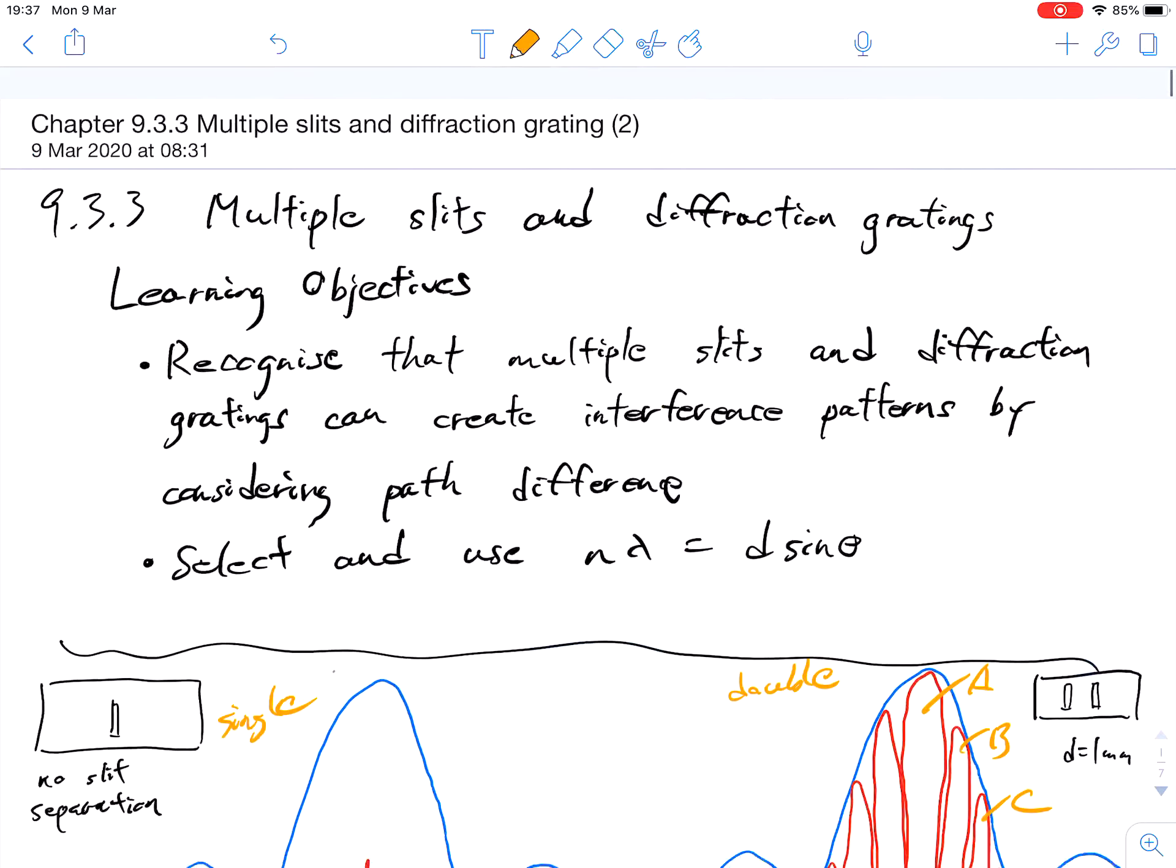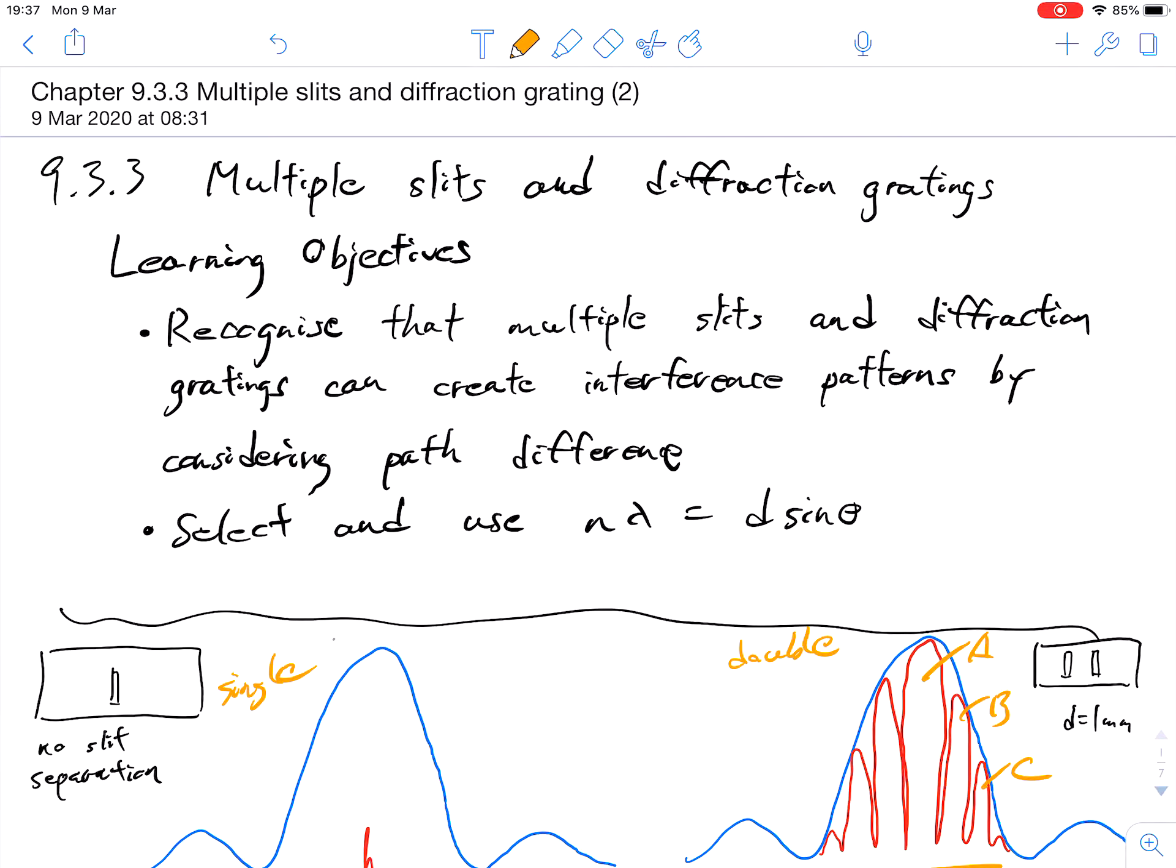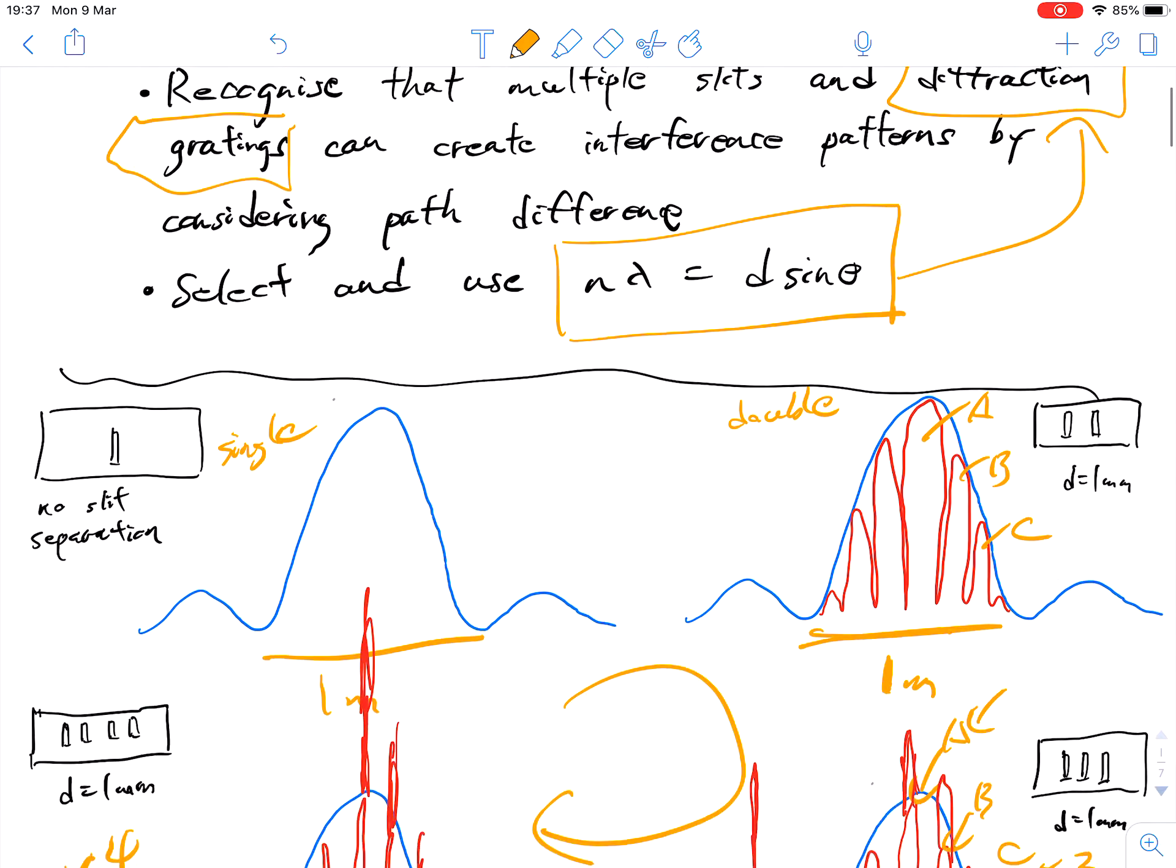Welcome to part two of chapter 9.3.3. This time we're going to focus mostly on our formula here, n lambda equals d sine theta.